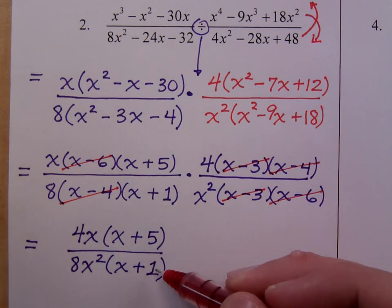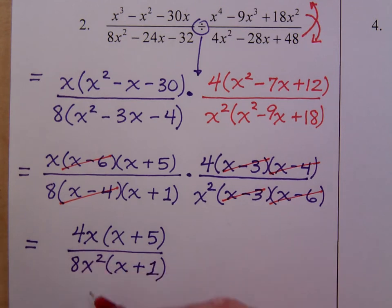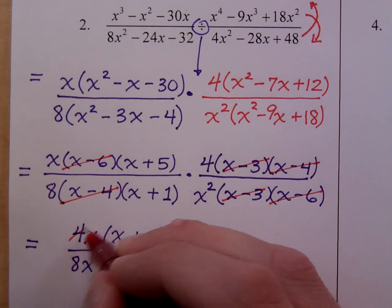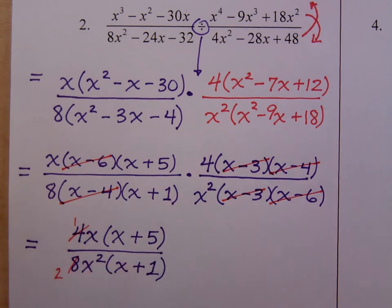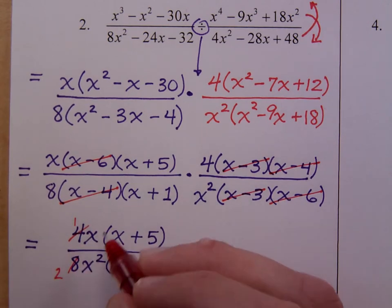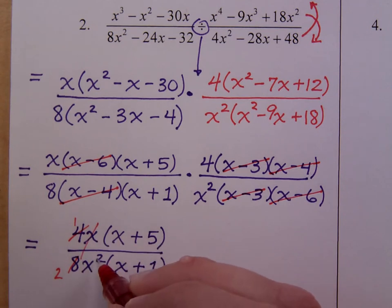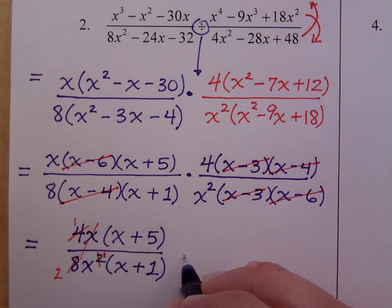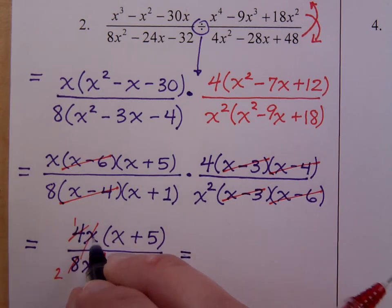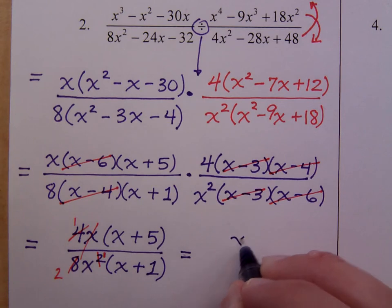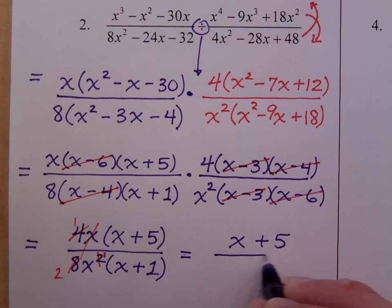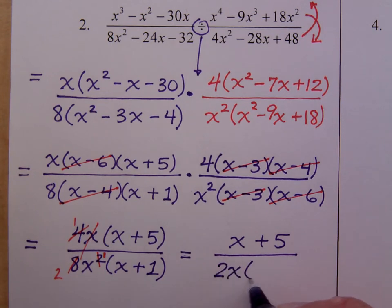With the larger factors, x plus 5 and x plus 1, you can't go any further. But 4x and 8x squared, you can reduce that. 4 and 8 reduce to give you 1 and 2. x and x squared reduce to give you x here and just 1x there. In our final answer, this is just x plus 5 all over 2x and x plus 1. Leave this factored. Don't try to multiply that back in.